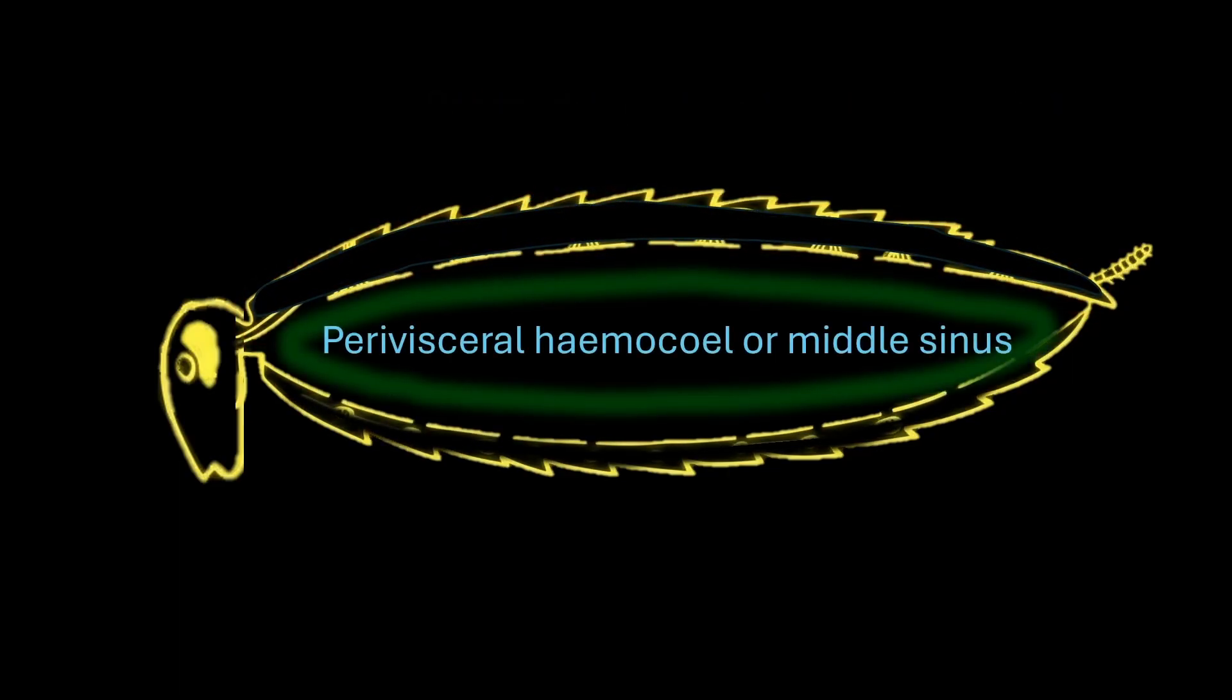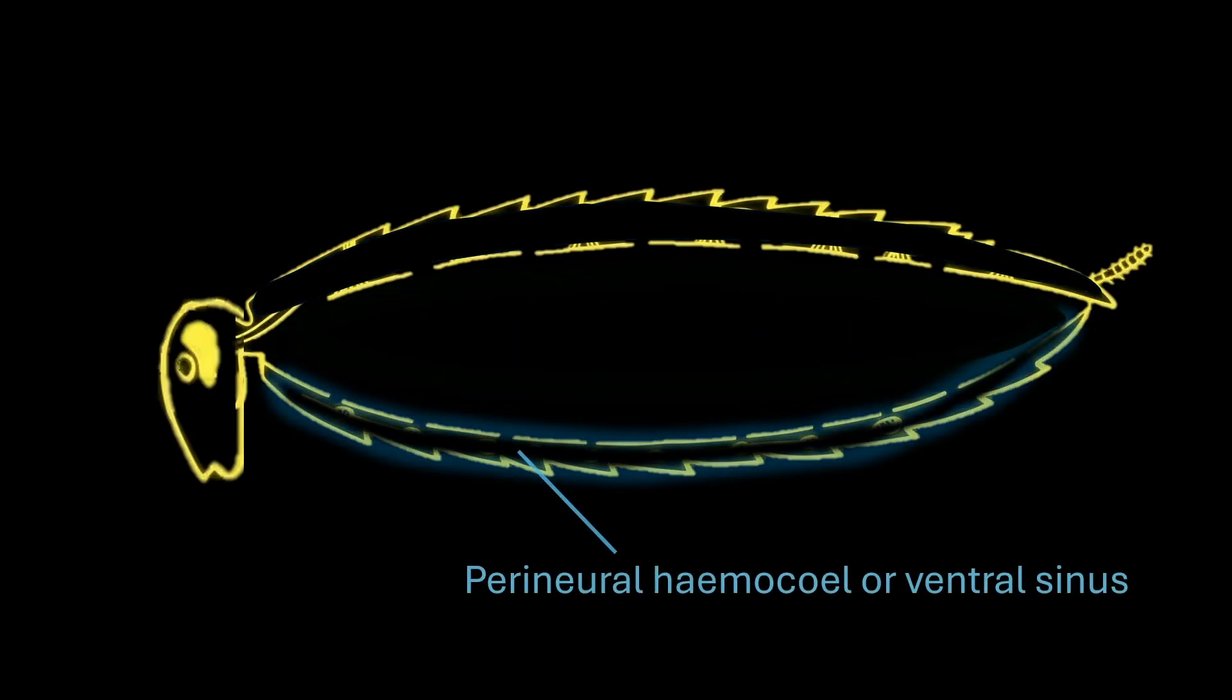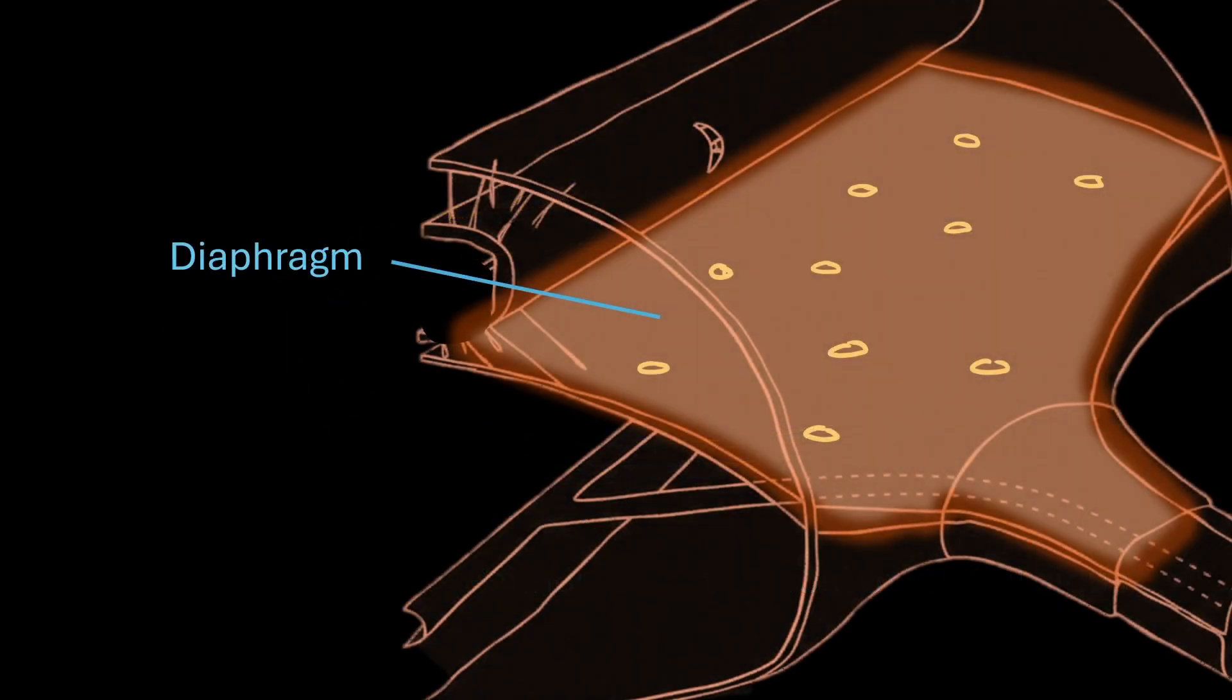And at the bottom lies the perineural hemocele or the ventral sinus, which encloses the nerve cord. These three sinuses are separated by a thin muscular sheet known as diaphragm.